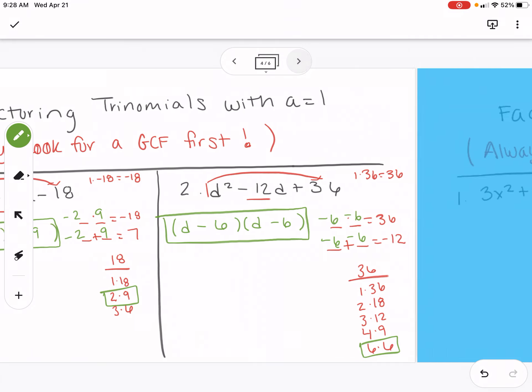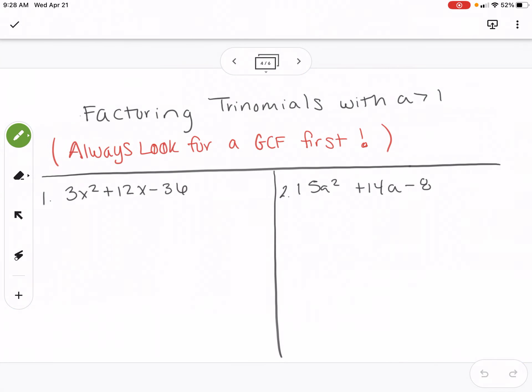Now, sometimes you're going to have trinomials where the a is greater than one, so where the number in front of the squared is bigger than one. Your process will still be the same, but very important, especially with these, that you look for a greatest common factor first before you do anything else.